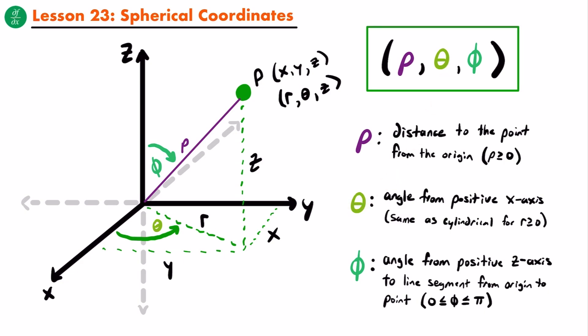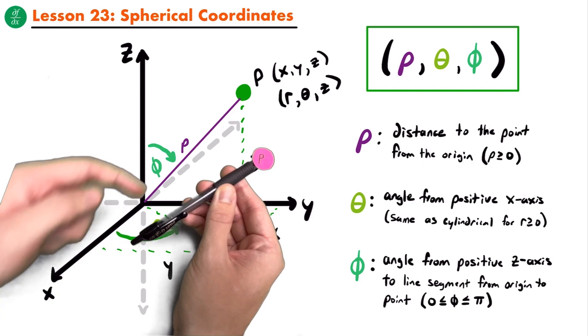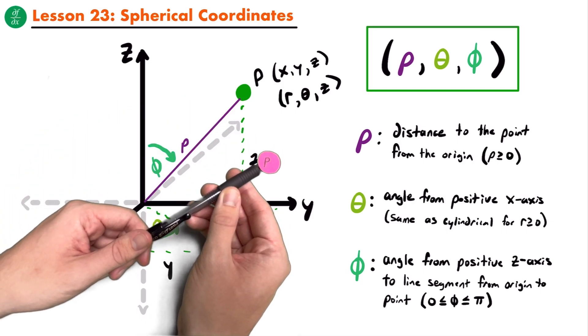The only coordinate that can be negative for a set of spherical coordinates will be theta. The reason that we define phi this way — the reason why it can only be between 0 and pi — is because if you were to measure an angle greater than pi from the z-axis, an angle of pi is 180 degrees. So if you measured pi from the positive z-axis, that would take you to the negative z-axis. If you went beyond an angle of pi, you could just measure that angle from the positive z-axis the other way, giving an angle less than pi.